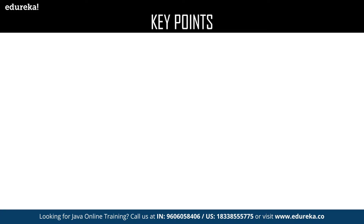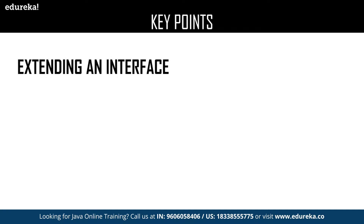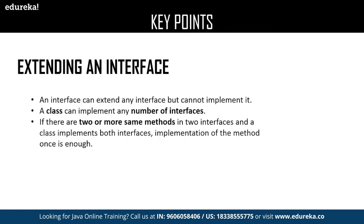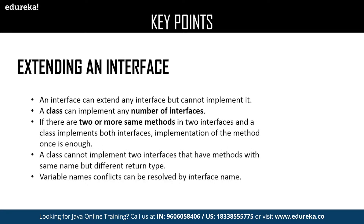The next key point is extending an interface. An interface can extend any number of interfaces but cannot implement them, whereas a class can implement any number of interfaces. If there are two or more same methods in different interfaces, then the class can implement all the interfaces but one single method is enough to perform the operation. A class cannot implement two interfaces that have methods with the same name but different return type. The major advantage is that variable name conflicts can be easily resolved by using the interface name.